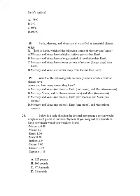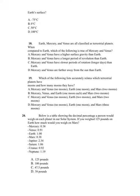Number 18. Earth, Mercury, and Venus are all classified as terrestrial planets. When compared to Earth, which of the following is true of Mercury and Venus? A. Mercury and Venus have higher surface gravity than Earth. B. Mercury and Venus have longer period of revolution than Earth. C. Mercury and Venus have slower periods of rotation, or longer days, than Earth. D. Mercury and Venus are farther away from the Sun than Earth.